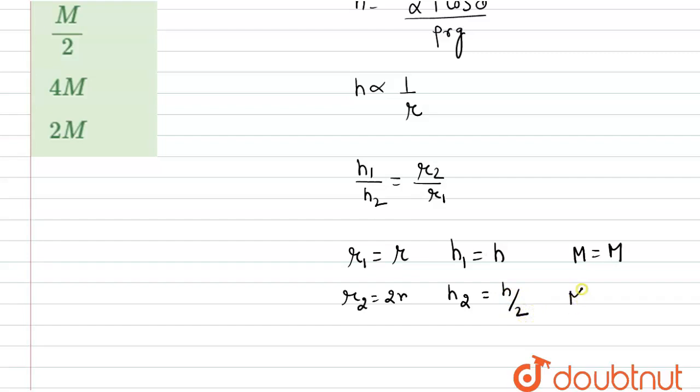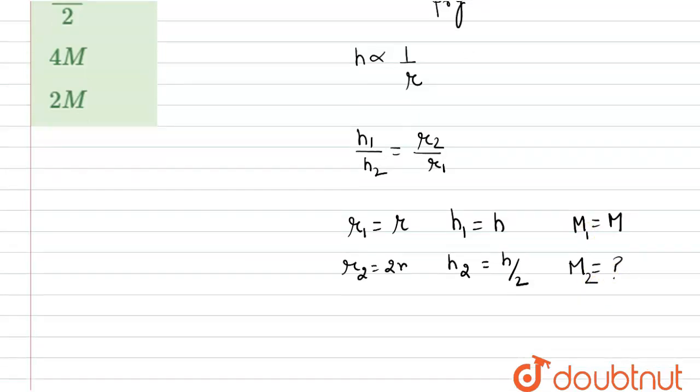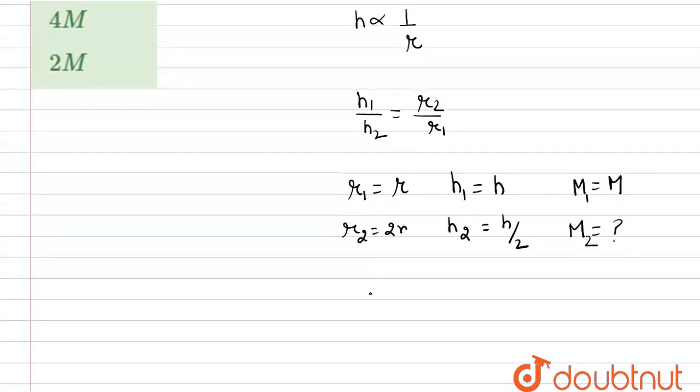Now we have to find out mass m2. Now we know mass is the volume into density. So in first case, volume of this capillary tube, capillary is just like a cylinder, so we use volume as pi r square h and density is rho.